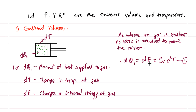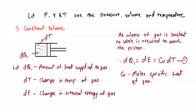DQ1 is equal to the change in internal energy, which is equal to Cv·DT, where Cv is the molar specific heat of the gas.